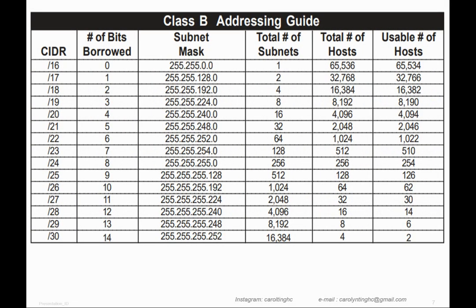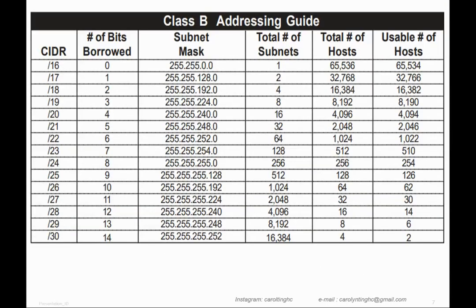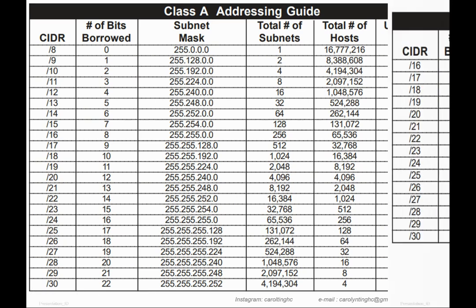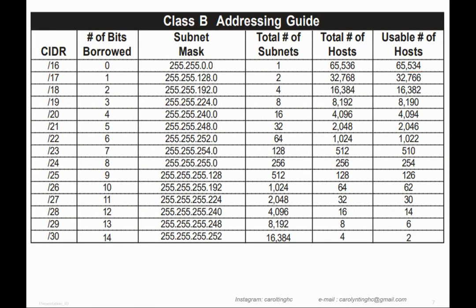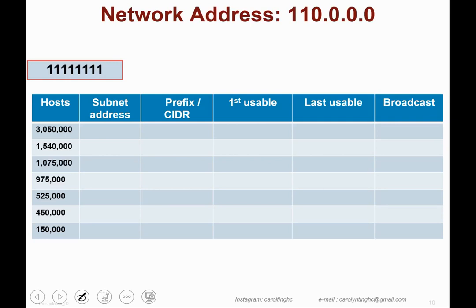For Class B, the maximum usable hosts are 65,534, with a suggested CIDR of slash 16. Note that CIDR and prefix refer to the same thing. For Class C, the usable hosts are 254 and the suggested CIDR is slash 24. You can use a calculator, but this addressing guide is a great reference whenever you have usable hosts exceeding one million. Now let's move on to our first practice.